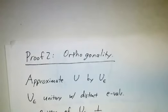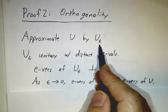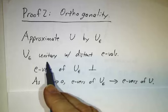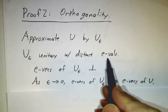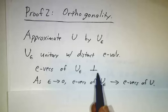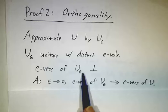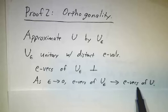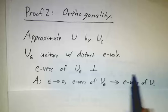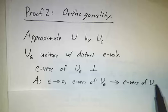Orthogonality, this also works like with Hermitian matrices. You can approximate U by a uε, where uε is unitary and has distinct eigenvalues and so is diagonalizable. But then the eigenvectors of uε are orthogonal. And then you take limits as ε goes to 0. Each one of the eigenvectors of uε has a limit that becomes an eigenvector of U. So you always have enough eigenvectors of U to form an orthonormal basis.